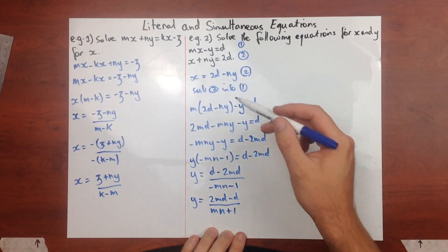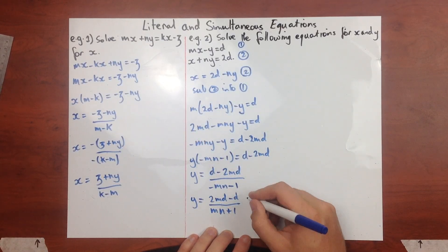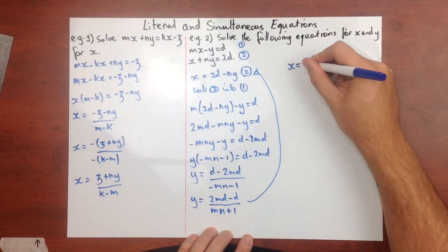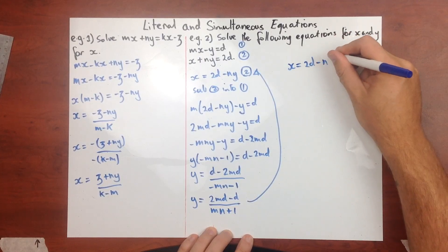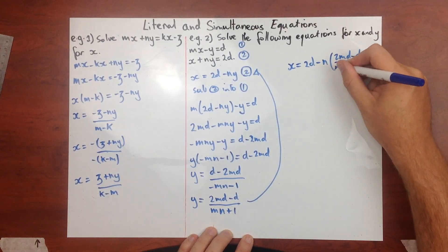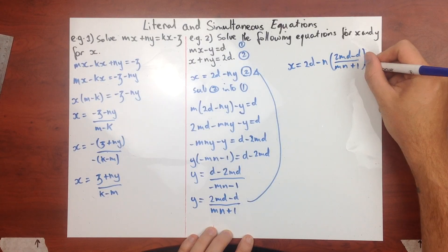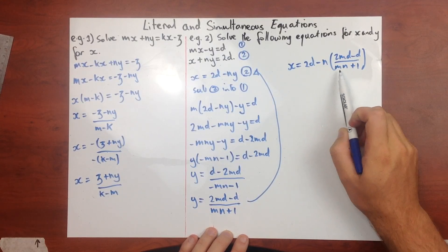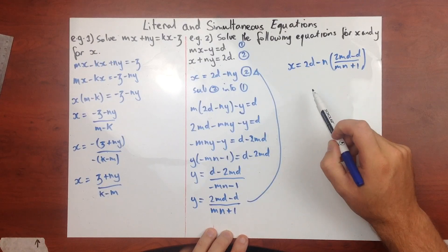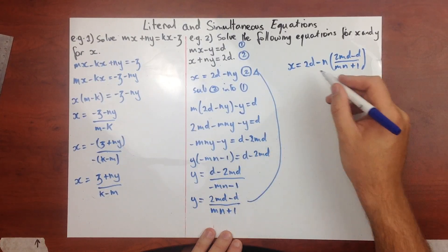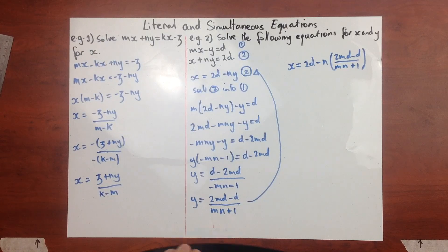Now I need the value for x as well. Substituting our y value back in gives x equals 2d minus n times (2md minus d), all over (mn plus 1). There's no further simplification that makes it significantly neater, so we leave that as our value for x, and y equals (2md minus d) over (mn plus 1).